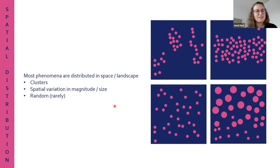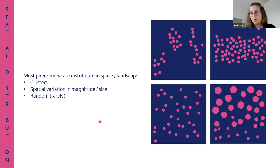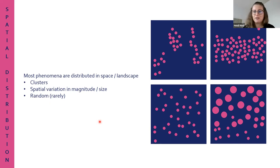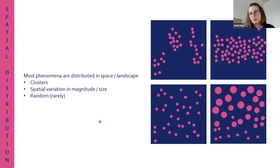We can use information about spatial distribution to find out how things are distributed, but also what drives their distribution - to try to understand the causal predictors of different phenomena and different spatial distributions.